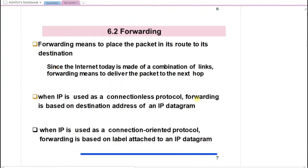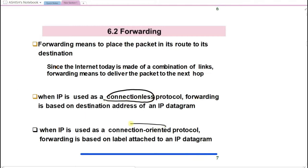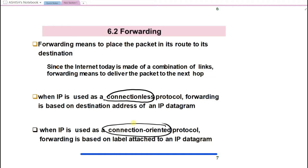Forwarding means how routers forward packets to the next router so that packets can reach the destination. Communication happens in two ways: connectionless and connection-oriented. Connectionless is a datagram service where there is no need to establish a path and packets move independently. Connection-oriented is called virtual circuit, which has three phases: setup phase, data transfer, and teardown phase. In connectionless we use the destination address; in connection-oriented we use a label.